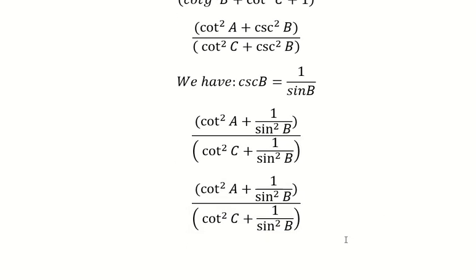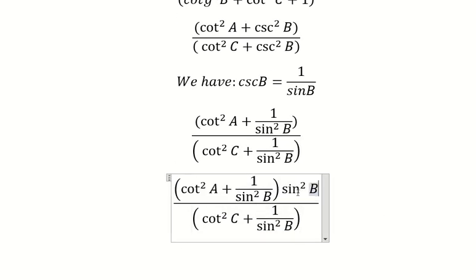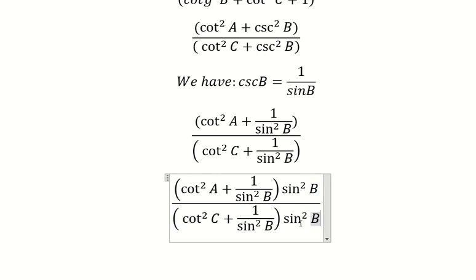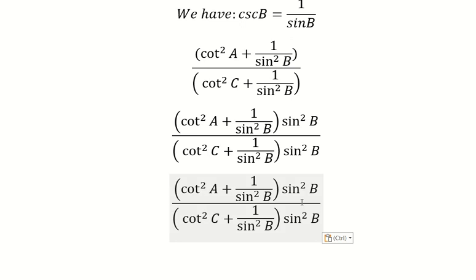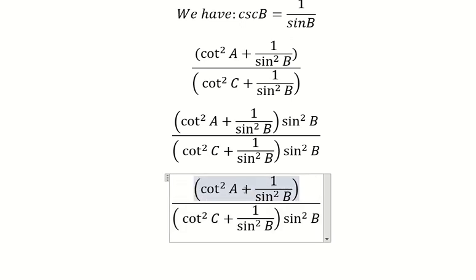So we need to multiply by sine B squared on the numerator and denominator. This one multiplies by this one and this one, and this one multiplies by this one and this one. And we have number one.